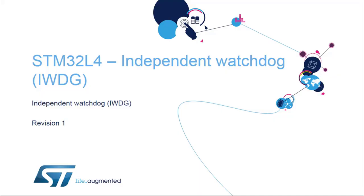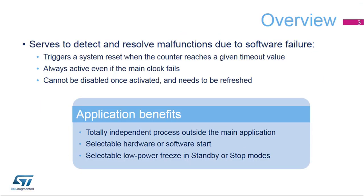Hello and welcome to this presentation of the STM32 Independent Watchdog. It covers the main features of this peripheral, which can be used either as a watchdog to reset the device when a problem occurs, or as a free-running timer for application timeout management. The independent watchdog is used to detect and resolve malfunctions due to software failure.